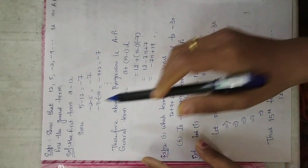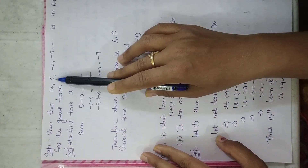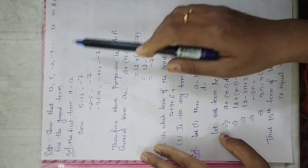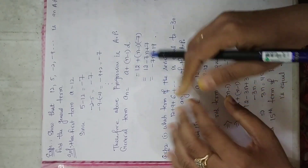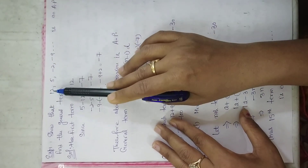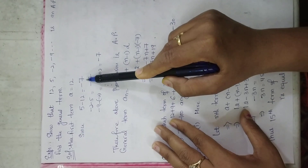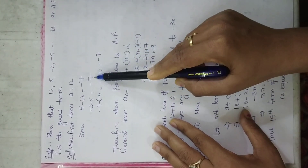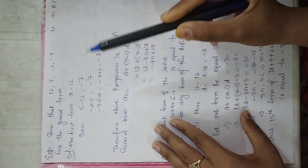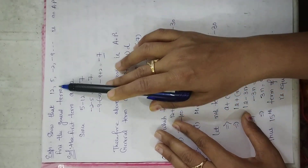Now we will do some examples. Example number 1: Show that 12, 5, minus 2, minus 9 and so on is an AP. To show this is an AP, we apply the definition — the difference between a term and its preceding term must be constant. 5 minus 12 is minus 7. Minus 2 minus 5 is also minus 7. Minus 9 minus (minus 2) equals minus 9 plus 2, which is also minus 7. So the difference is minus 7 throughout, confirming this is an AP.